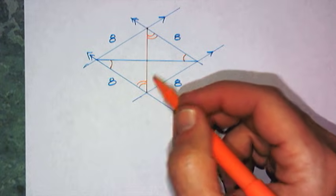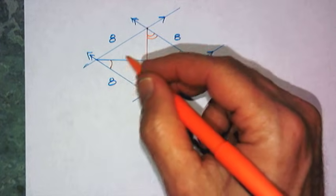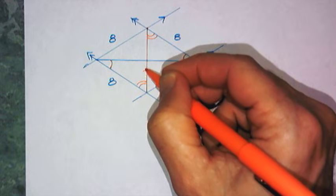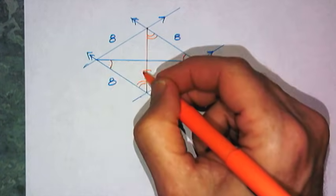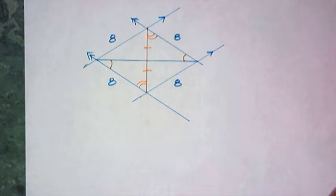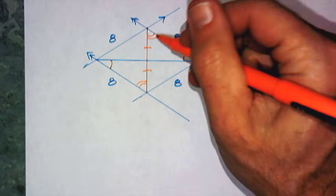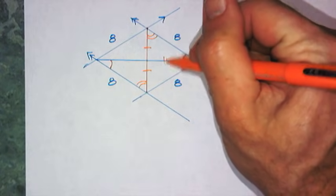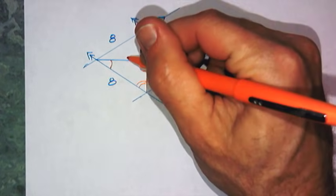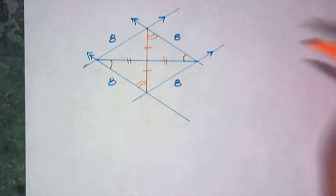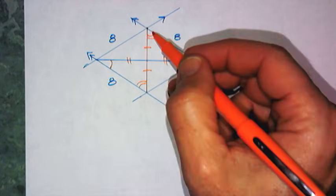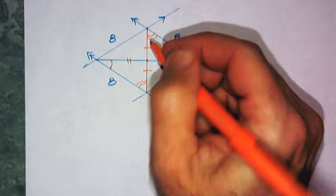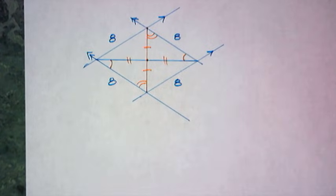Now I'm going to carefully mark the congruent parts on those two triangles. Opposite of the single mark is above the double, and opposite the double mark we'll put those two. What you notice when I mark the two triangles congruent is that the diagonals meet in such a way that they bisect each other.